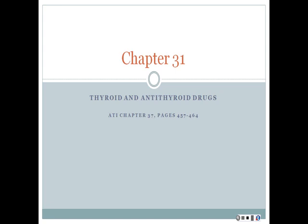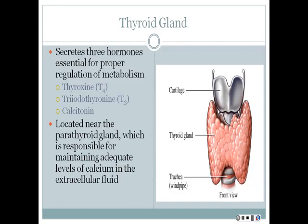The thyroid gland is located in the front of the larynx; lobes extend laterally on both sides of the front of the neck. It secretes three different hormones: thyroxine (T4), triiodothyronine (T3), and calcitonin. The parathyroid lies just behind the thyroid and has two pairs of very small bean-shaped glands. When blood levels of T3 and T4 are low, the anterior pituitary gland will secrete thyroid stimulating hormone (TSH), and then the thyroid will release those hormones.